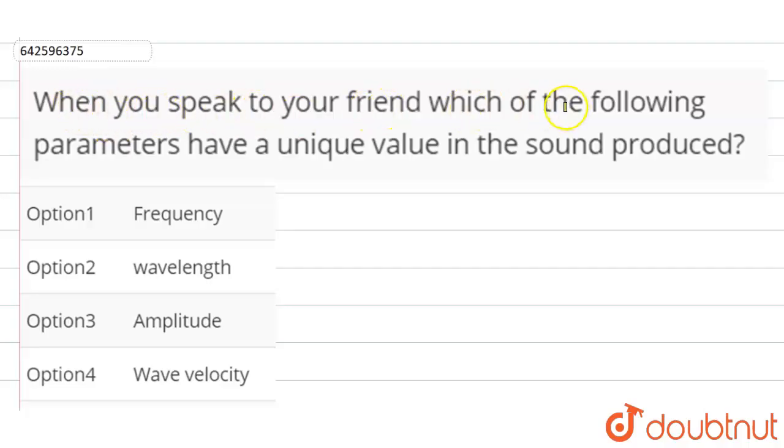speak to your friend, which of the following parameters have a unique value in the sound produced? All right, so we are given four options and we need to choose the parameters which have unique value in the sound produced. There can be multiple correct options, so we need to choose all the correct options. Let's see, here is